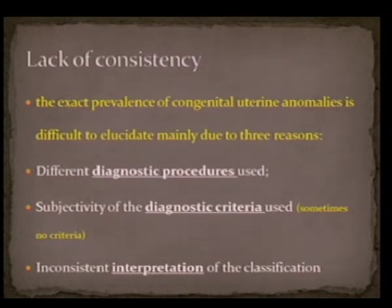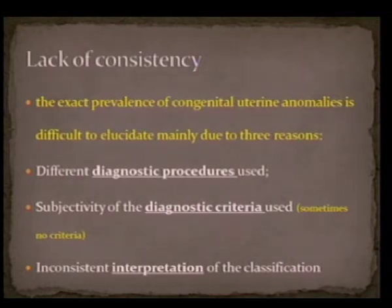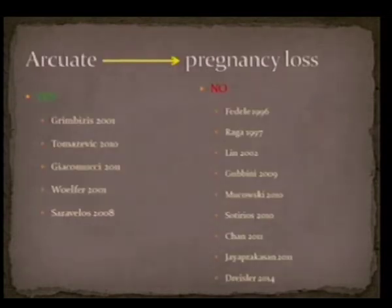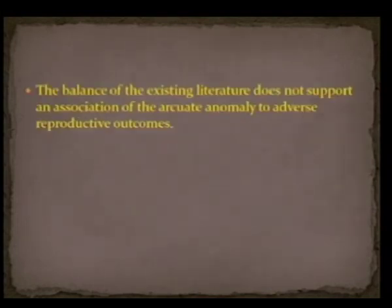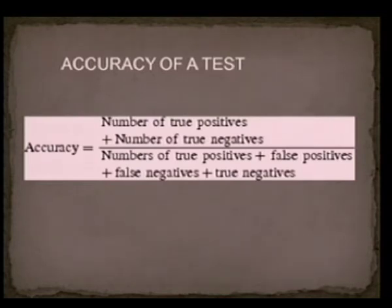The first factor is that different diagnostic procedures are used across studies. The second is the subjectivity of the diagnostic criteria — sometimes there are not even any criteria in some studies. The last is inconsistency in the interpretation of the classification. Some studies claim that arcuate uterus has an adverse effect on reproductive outcome and an association with recurrent miscarriage, while others claim there is no adverse effect. The balance of existing studies does not support an association between arcuate uterus and recurrent miscarriage.